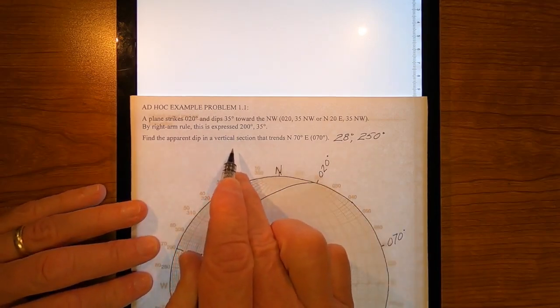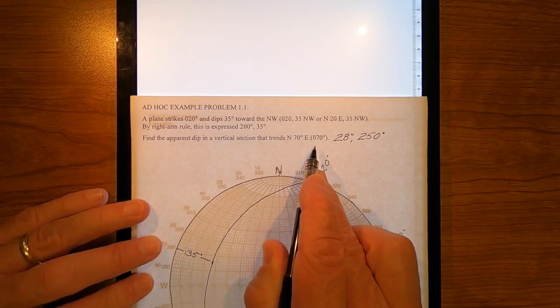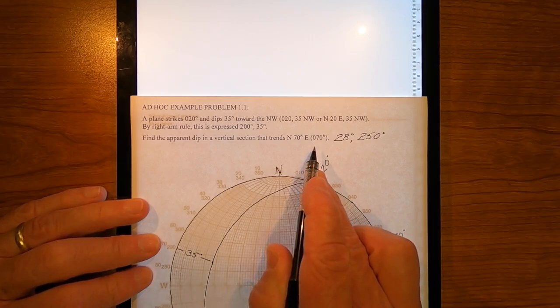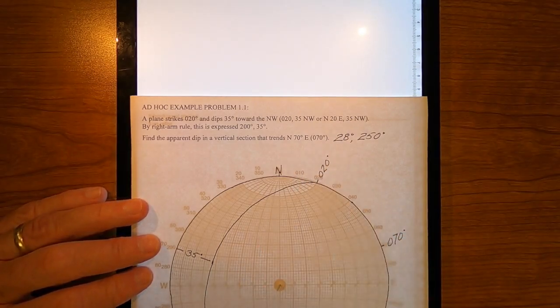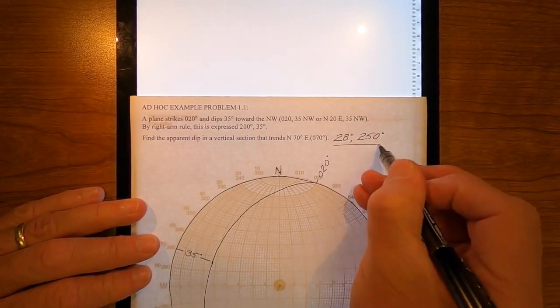Find the apparent dip in a vertical section that trends north 70 east. Well, a vertical section that trends north 70 east also trends south 70 west, or in other words, an azimuth of two five zero. So there you have it.